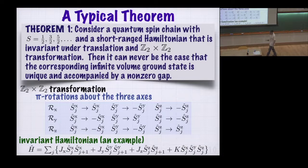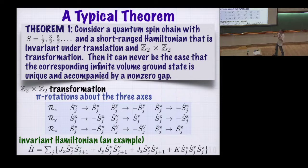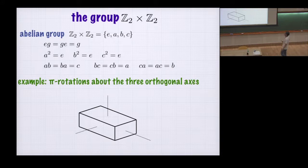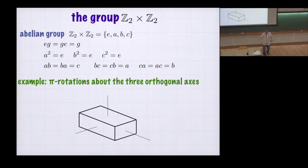So I hope I've convinced you that all these conditions are necessary. The statement to be proved is: take a spin chain with half-integer spin, short-range interaction, translation invariance, and Z2 cross Z2 invariance—then there can be no unique gapped ground state. Before going on, let me quickly review what the group Z2 cross Z2 is and its representations and projective representations. Z2 cross Z2 is a very simple group of four elements, where E is the identity and the rest satisfy the group rules.